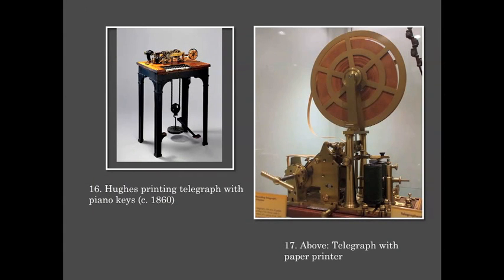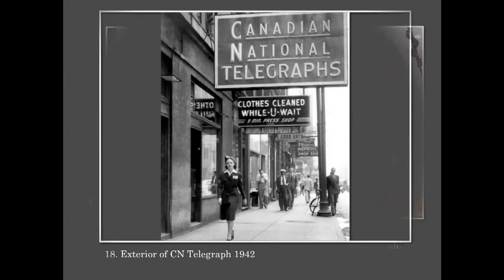Original telegraph printed messages on paper tape, but in America, machines eventually sent messages by key and were received by ear. A trained Morse code operator could transmit at 40 to 50 words per minute. Here's an interesting picture of the exterior of the CN telegraph station in 1942.